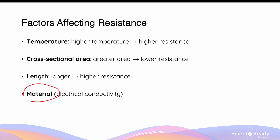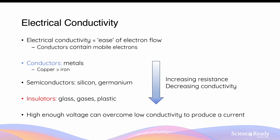Finally, the material itself has its own electrical conductivity, defined as the ease of electron flow. Conductors share the common feature of containing mobile or free-moving electrons, but within conductors there are various degrees of conductivity. For example, while all metals are quite conductive, some metals like copper have lower electrical resistance compared to others such as iron. Using the same voltage, we would expect higher current through a copper wire compared to an iron wire.